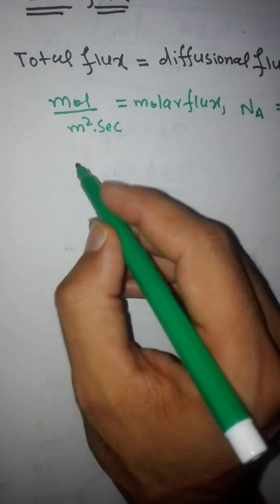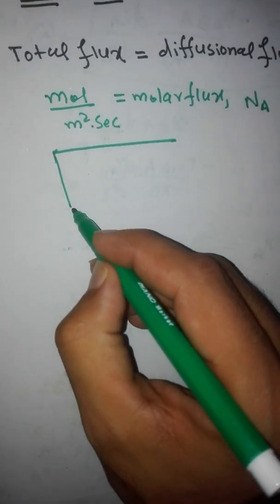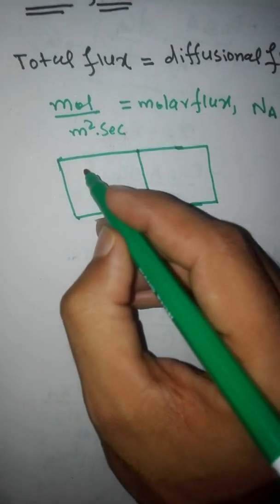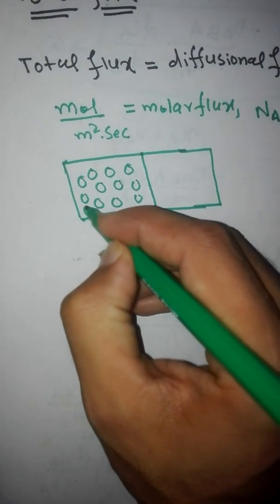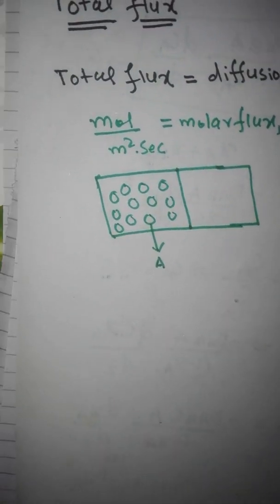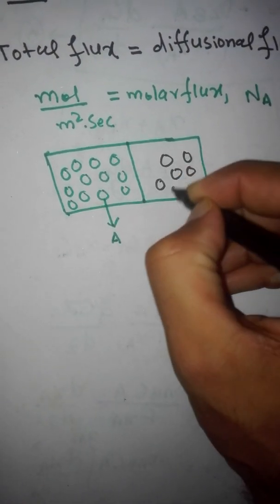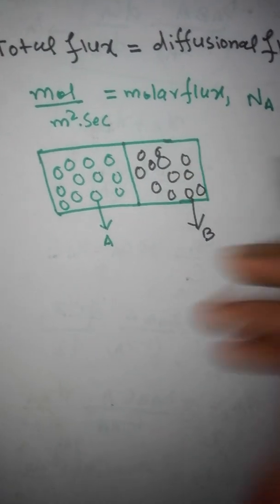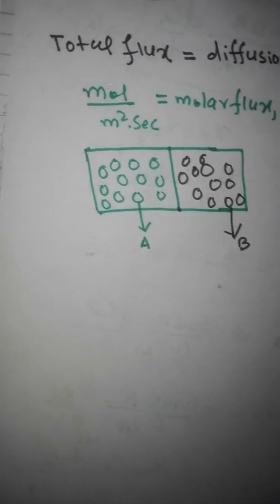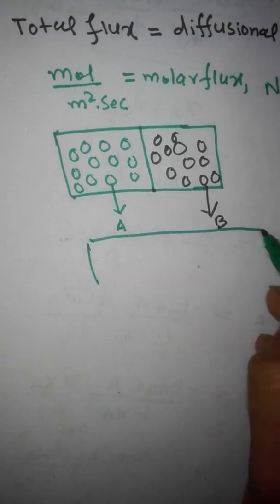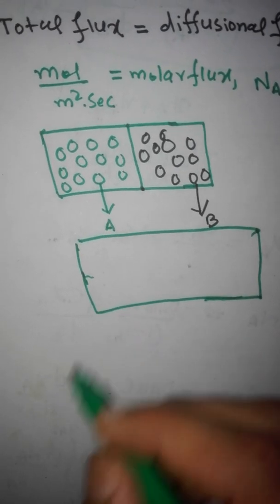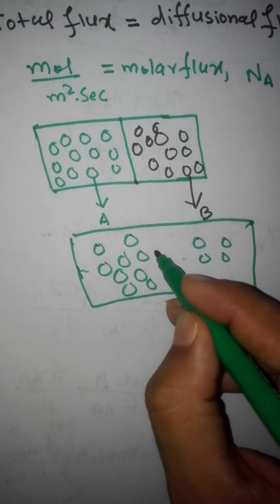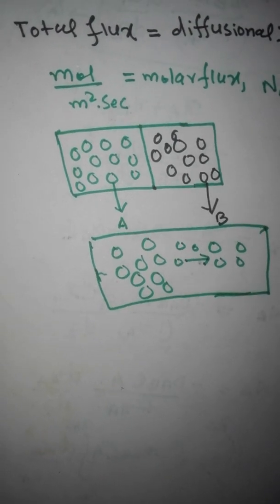Diffusional flux is obtained from Fick's law of molecular diffusion. Consider a box containing two gases in two compartments: gas A on one side and gas B on the other side, separated by a barrier or wall. If we remove the wall, these gases will mix with each other.